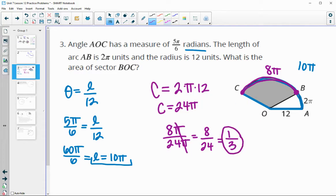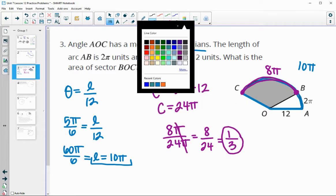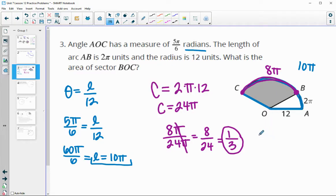This is how much of our circle we have. So we want 1 third of the total area of this circle. Area is pi times the radius squared. So we want 1 third of 144 pi, which is the area of the whole circle. So the area of this sector is going to be 48 pi units squared.